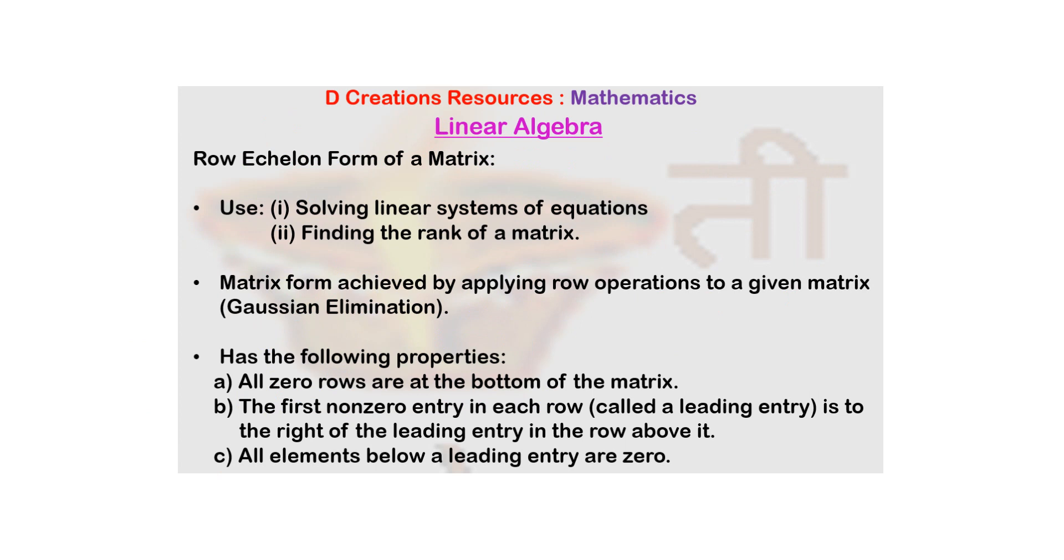Sometimes it's also called echelon form. Now there are three basic properties that need to be satisfied: all the zero rows have to be at the bottom of the matrix, the first non-zero entry in each row, called a leading entry, has to be to the right of the leading entry in the row above it, and all elements below a leading entry need to be zero.